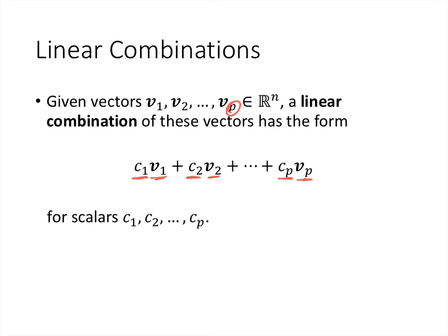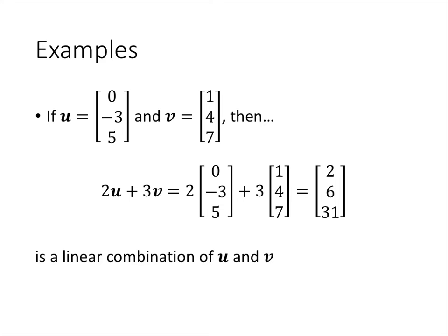For example, if we have two vectors u and v in R3, we can take any two scalars, multiply the first by u and the second by v, and add the results. One example is 2 times u plus 3 times v. Taking 2 times [0, -3, 5] plus 3 times [1, 4, 7], we get the vector [2, 6, 31]. So [2, 6, 31] is a linear combination of u and v. Some vectors will be linear combinations of u and v, and some won't.